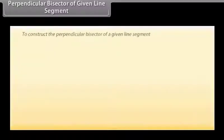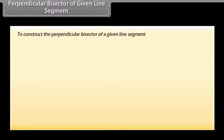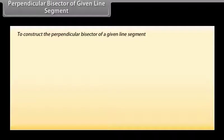Now we will learn to construct the perpendicular bisector of a given line segment. Let us take a line segment AB. We want to construct its perpendicular bisector.